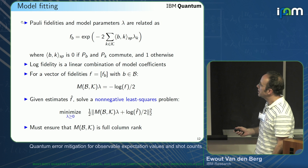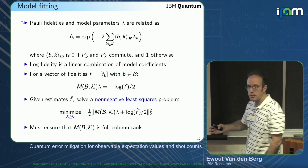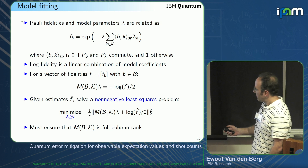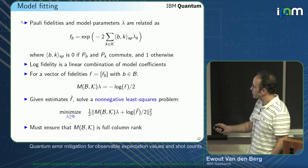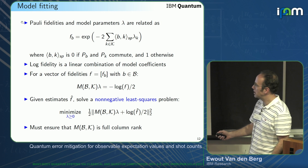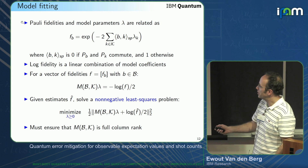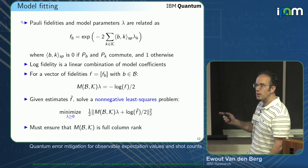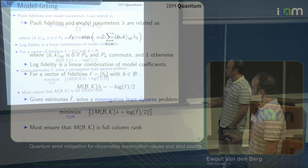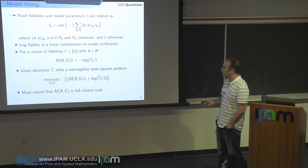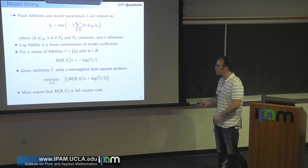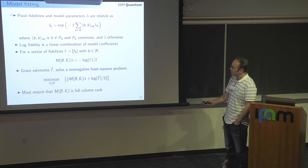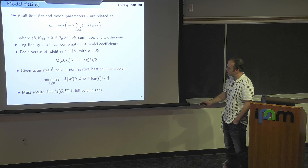The Pauli fidelities and model parameters are related as follows: the fidelity of some Pauli b is the sum over all noise terms, where the symplectic inner product is zero if Pauli b and Pauli k commute, otherwise one times the λ_k model parameter. This is log-linear in the model coefficients — it can be represented as a binary vector inner product. For a set of benchmark fidelities b, you form a binary matrix M, and M times λ gives minus log of the fidelity over two.